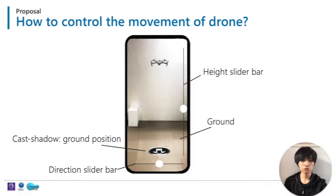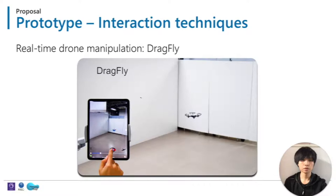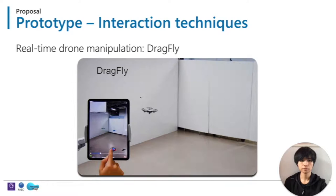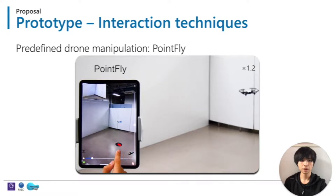Based on the idea, we made a prototype and designed 4 interaction techniques. We found that they can cover most of the visual live-site applications. First, drag fly: drag the caster shadow, and the flying drone will track the virtual drone in real-time. Second, point fly: point the virtual drone to a target position, and the drone will fly there accurately.